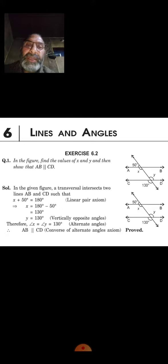Solution: In the given figure, a transversal intersects two lines AB and CD. We have x plus 50 degrees equals 180 degrees, which is a linear pair.